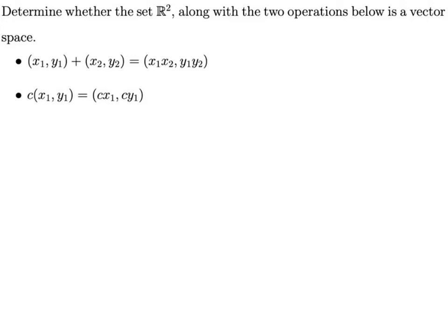So what we have to do is go through all 10 axioms or try to verify all 10 axioms. If we can verify that all 10 axioms hold for this set, R², set of ordered pairs with these two operations, then we've proven that it's a vector space. If we can find one axiom that does not hold for this set with these operations, then we've proven it's not a vector space. So let's get started.